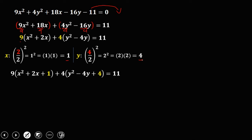The numbers added on the left side must also be added on the right side. However, since there are coefficients outside each group, you must multiply the added number by the coefficient and then place that product on the right side. Do this for both x and y groups.